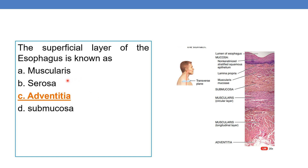In the rest of the digestive system — the GI tract — the outermost layer is serosa; serosa is the superficial layer. But in the esophagus, the superficial layer is known as adventitia.